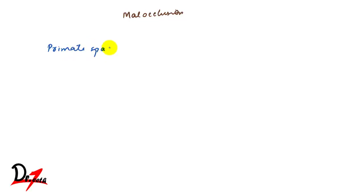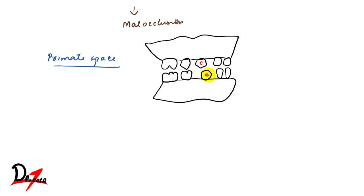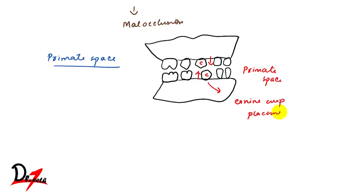We also have another space called the primate space, because it is generally seen in primates. You will find this space mesial to the upper canine and distal to the lower canine. That is the primate space, also called the simian space or anthropoid space. It helps in the placement of the canine cusp of the opposing arch.